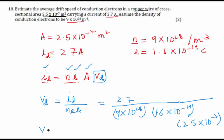When we calculate this, we get the value as 7.5×10⁻⁴ meters per second. So that will be the answer to our question.